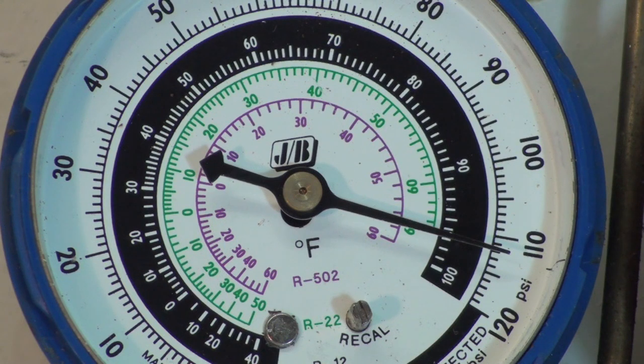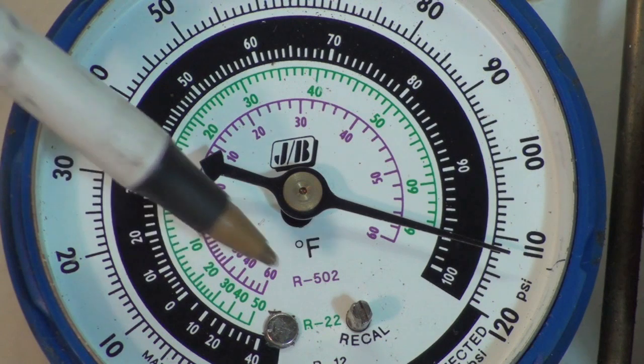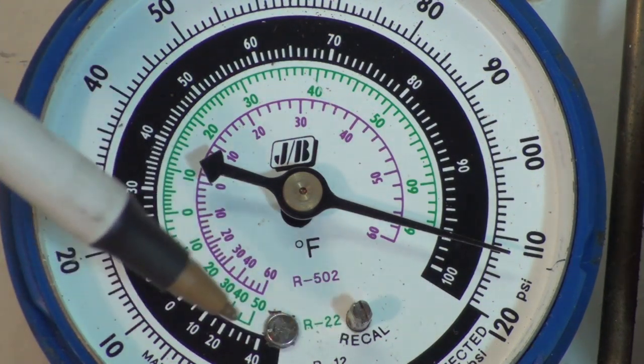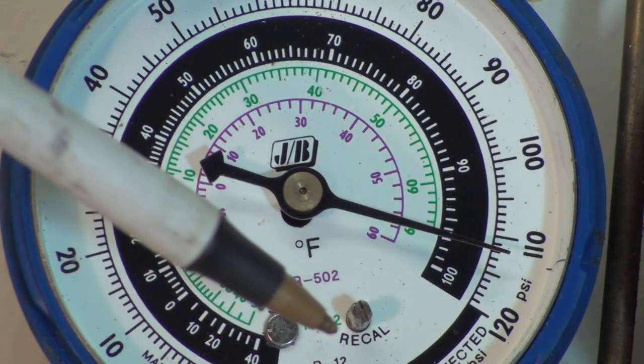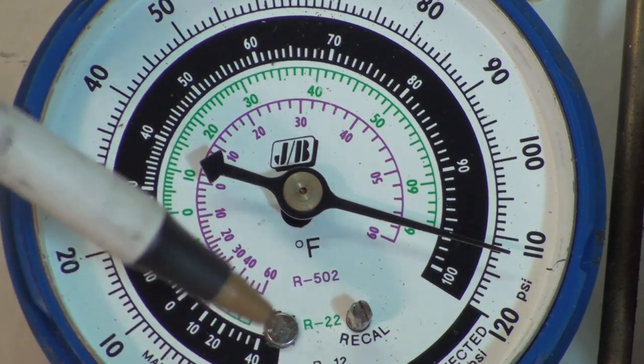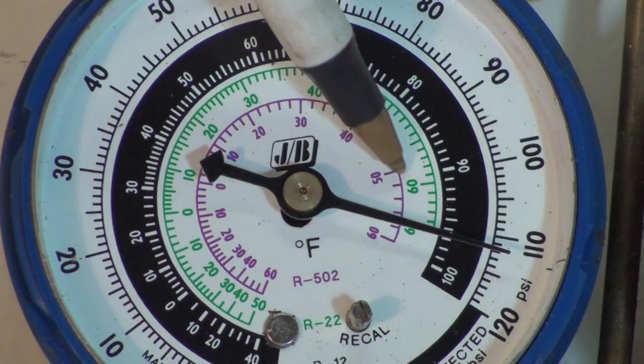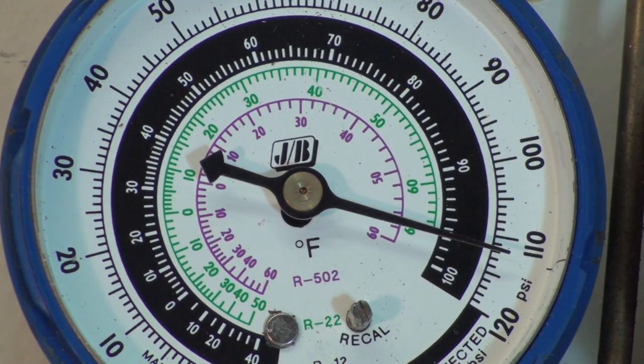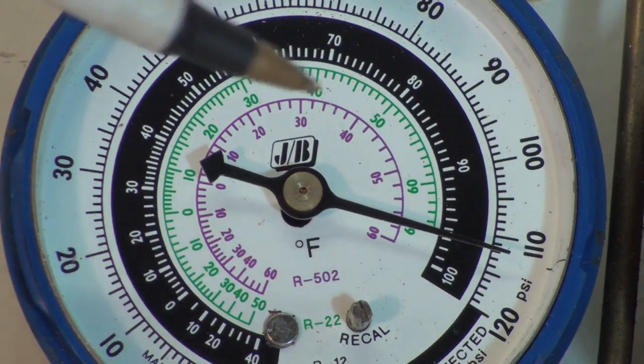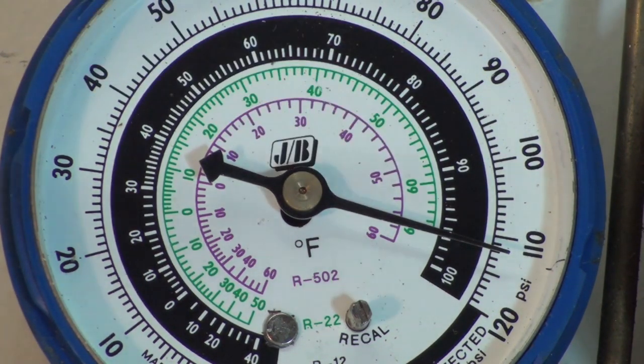Okay, here we've got the compound gauge of the manifold gauge set and we're showing just right at a little under 112 pounds, maybe 111 and a half. If you look on down here you can see it says R12 or R502 and R22. If you follow the green one around, the 22 one which is the second one from the center, you will see that we have 60 here and it goes up to pretty much 65 and we're looking real close to that 65.